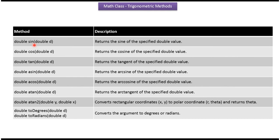Sine method returns sine of the specified double value. Cos method returns cosine of the specified double value. Tan method returns tangent of the specified double value.